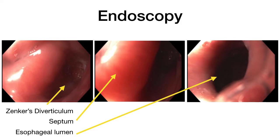To review these findings: the Zenker's diverticulum, the septum, and the esophageal lumen. It is important to be very careful when performing endoscopy in an elderly patient who complains of difficulty swallowing and whose symptoms are suggestive of Zenker's diverticulum. Thank you.